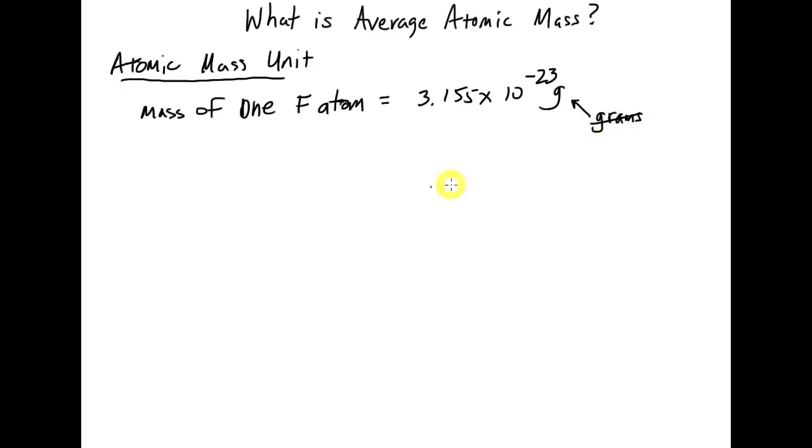And the unit that we're going to change that to is known as an atomic mass unit. So atomic mass units. And we're going to abbreviate this atomic mass unit as AMU. So this is a totally different unit. Well, it's measuring the same thing, but it's just a different measuring scale. So we have pounds, we have grams, and now we have atomic mass units.